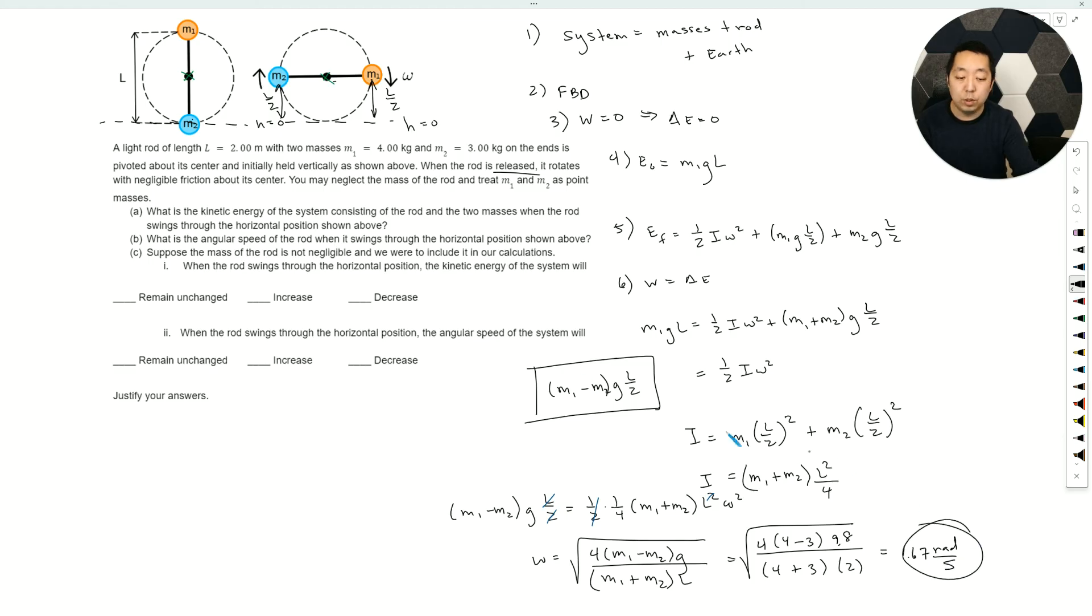We use our calculator to calculate the square root of 4 times 9.8 divided by 7 divided by 2. It's going to be 1.67 radians per second. I didn't compute the actual energy here. This would have been 4 minus 3 times 9.8 times L over 2, and that would have been 9.8 joules.